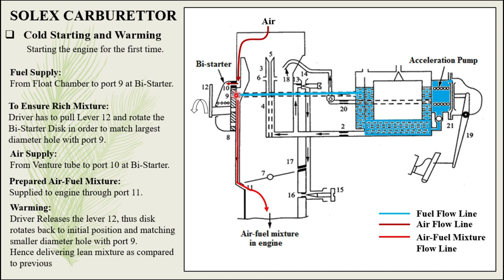For warming up, this much richness of mixture is not required; it can be reduced to a certain extent but should still be richer than normal running condition. When the driver releases lever 12, the disk rotates back to its initial position, matching the smaller diameter hole with port number 9, hence delivering a leaner mixture than before. Because the fuel flow is reduced while the air flow remains the same, a leaner mixture is delivered — but compared to normal running, it is still a rich mixture.